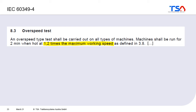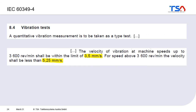To verify mechanical integrity, an overspeed test is conducted at 1.2 times the maximum working speed, after which the machine is typically disassembled and inspected. The standard also provides limits for the maximum vibration velocity.